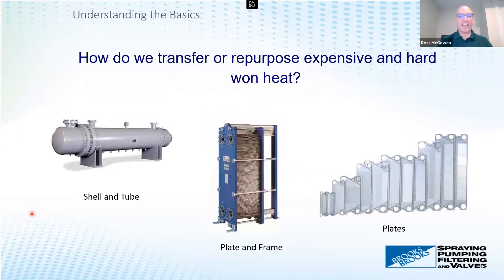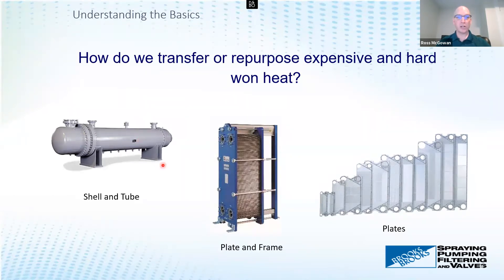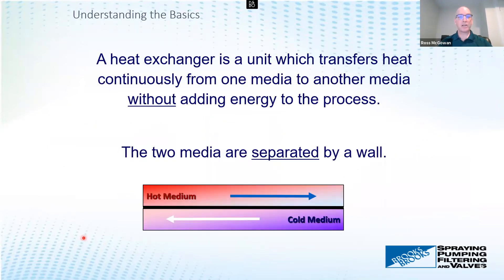There are really two ways to transfer or repurpose expensive heat. Those working in process facilities understand you want to recapture and repurpose that heat energy. The two major ways are through a shell and tube heat exchanger — which you've probably got sitting in your yard or on your process — and plate and frame exchangers, along with variants of these two. They're really the only two major technologies used for heat exchangers, and we'll talk about those. They all have advantages and disadvantages, and there's a reason you'd want to use one or the other.